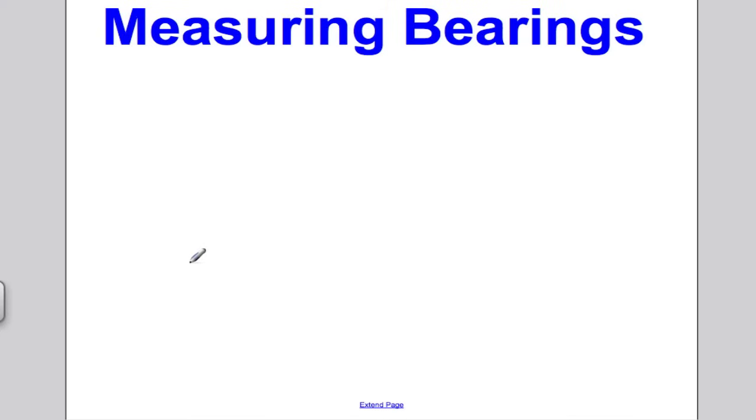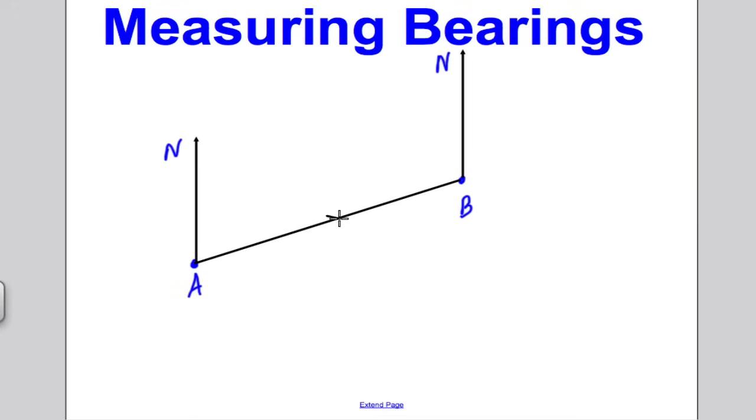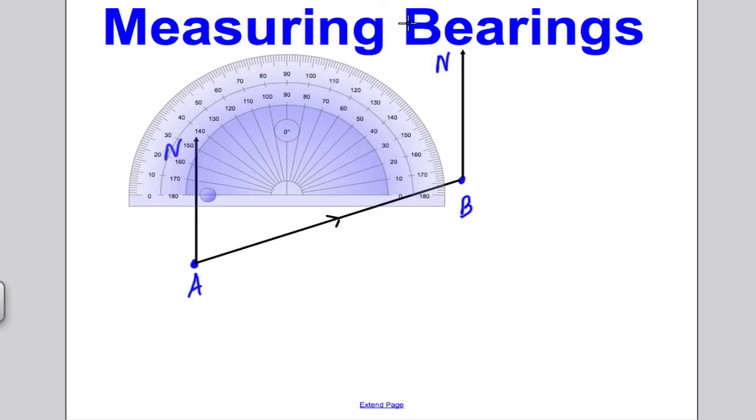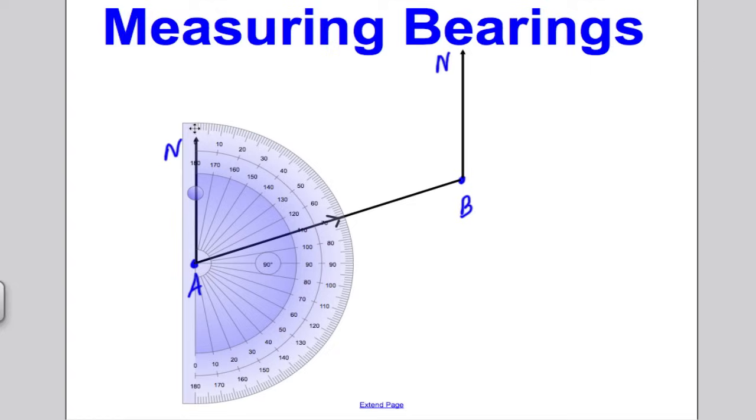Imagine I told you I was starting at point A, which is here, and I asked you, on what bearing do I need to walk to get to point B? How would I work that out? Well, the first thing you'd have to do is you'd have to draw north lines at A and B, because everything to do with bearings is measured from the north. Then what you do is you would consider on what direction from the north do I have to walk to be on the line that's walking directly from A to B.